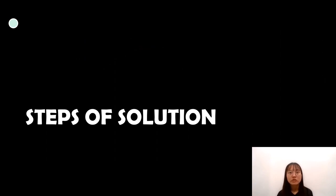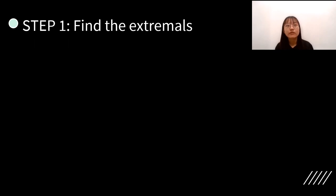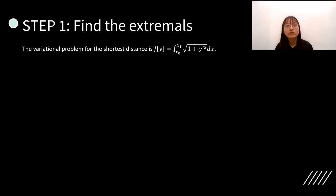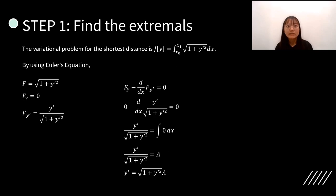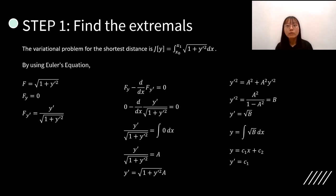First, we find the extremal. The general equation for the shortest distance is J equals the integral from x0 to x1 of square root of 1 plus y' squared dx. For the Euler equation, f equals square root of 1 plus y' squared, fy equals 0, and fy' equals y' divided by square root of 1 plus y' squared. Solving the Euler equation gives y equals c1*x plus c2 (equation 1), and y' equals c1.